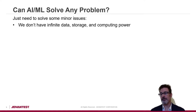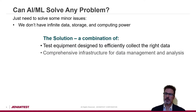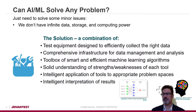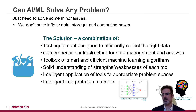Since AI and machine learning are very flexible, many people jump to the conclusion that they can solve any problem. That might be true if we had infinite data, storage, and computing power, but we're not there just yet — it still takes making intelligent decisions and knowing how to apply the technologies correctly. We see the solution as a combination of: test equipment designed to efficiently collect the right data, a comprehensive infrastructure for data management and analysis, a toolbox of smart and efficient machine learning algorithms applied with an understanding of each tool's strengths and weaknesses, and the intelligent interpretation of the results you get from applying those algorithms. Luckily for us, machines haven't completely replaced people just yet.